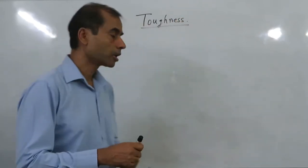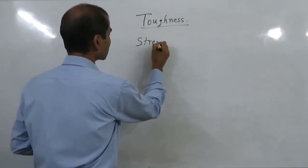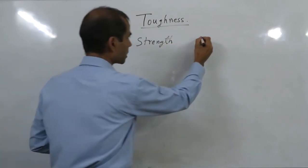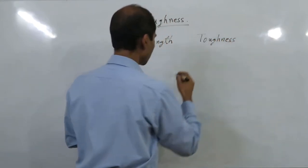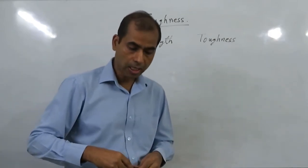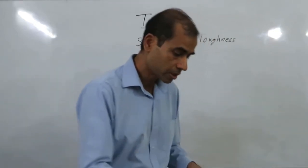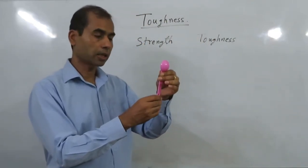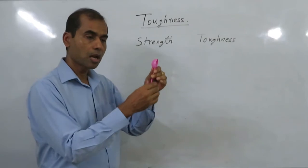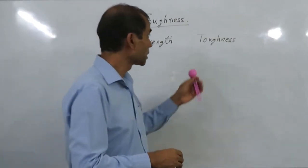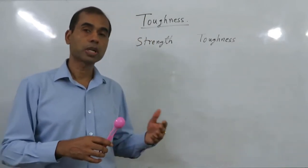There are two types of mechanical properties which are very important for materials: one is strength and another is toughness. For any engineering application, these two properties are extremely important. Strength means how much load the material can take when subjected to tension or compression — how much load it can take under tension.